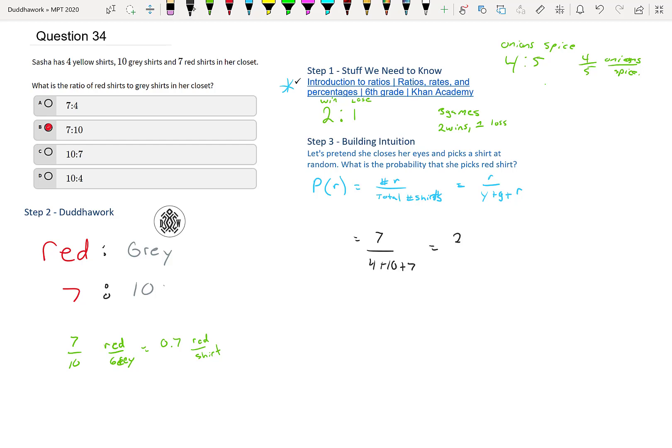So here, it's pretty simple. We have seven red shirts over yellow. In total, we have four plus 10 plus seven. So is seven, 21, 14 plus seven is 21. If we divide by seven on the top and bottom, we would get one over three.